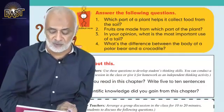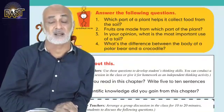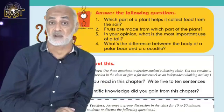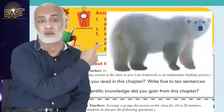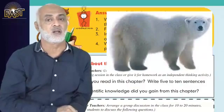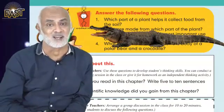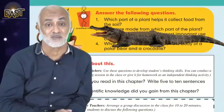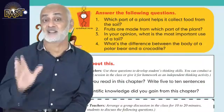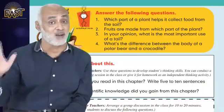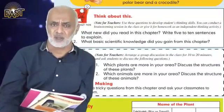Question number four: what's the difference between the body of a polar bear and a crocodile? Think about what the polar bear's tail looks like — here is the polar bear and here is its tail. And here is the crocodile and here is its tail. There is a major difference. Think about how the crocodile uses its tail, and write the main difference between the tail of a crocodile and the tail of a polar bear.